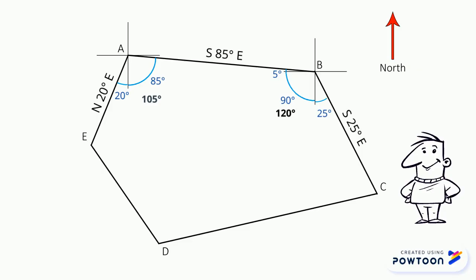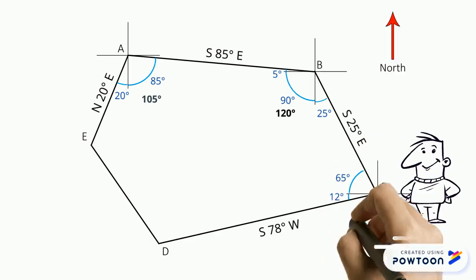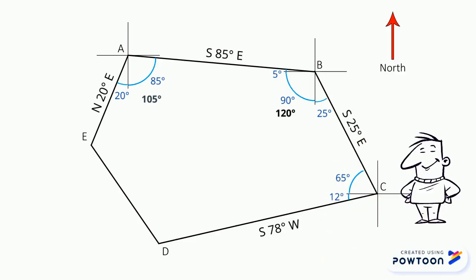The given bearing of point C towards point D is south 78 degrees west. If we subtract 90 from 78, that gives us 12 degrees, which is the measure of this part. And subtract 90 from 25, which gives us 65 degrees. If we add 12 and 65 degrees, the interior angle of point C is 77 degrees.